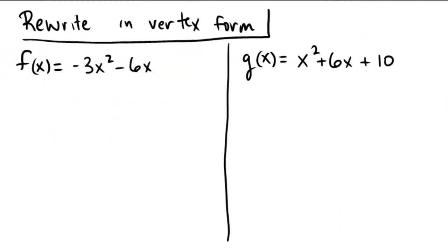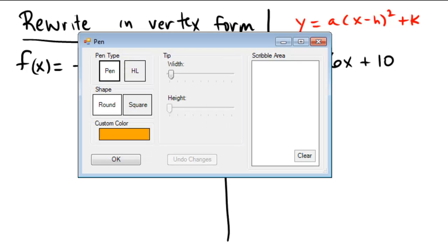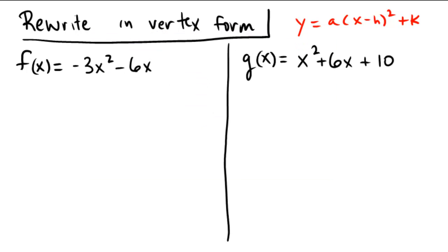This problem asks us to rewrite the following quadratics in vertex form. So vertex form, in case you are not familiar with it, is the form that looks like y equals a times x minus h squared plus k. And it's a huge advantage to write equations in this form because you can find the vertex at h, k. The vertex will always be located at h, k.